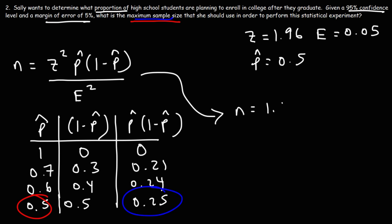So this is going to be 1.96 squared times 0.5 and then 1 minus 0.5 which is 0.5 divided by E squared or 0.05 squared. So we know that 0.5 times 0.5 is 0.25. Multiplying that by 1.96 squared that gives us 0.9604 and then we're going to divide that by 0.05 squared and so n in this example is going to be 384.16.